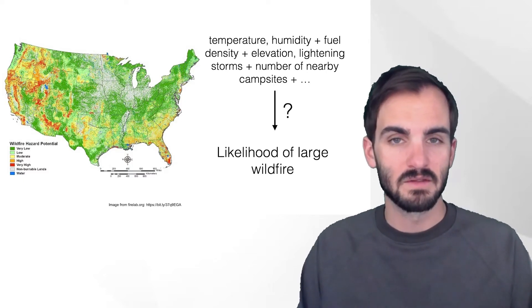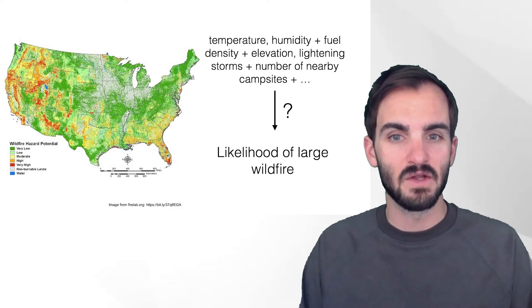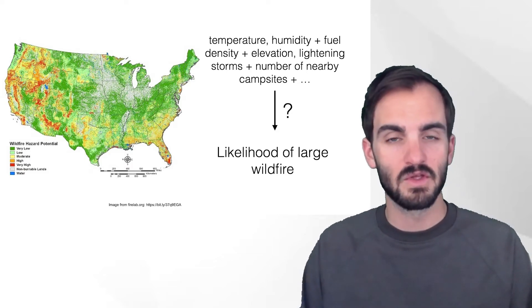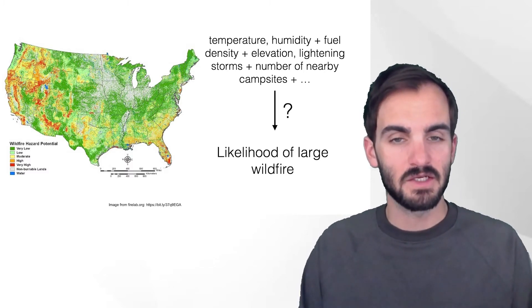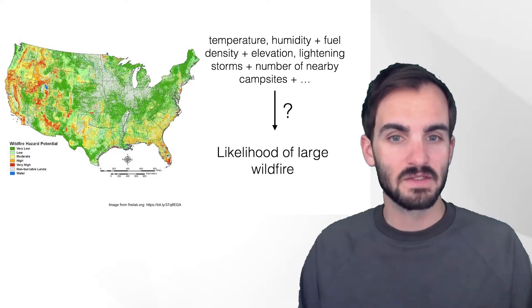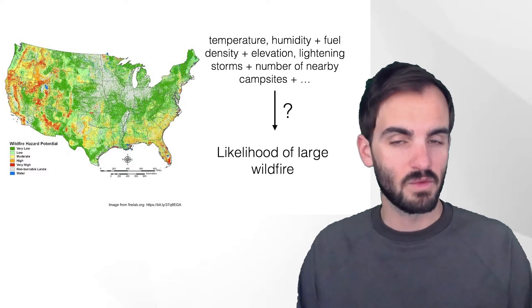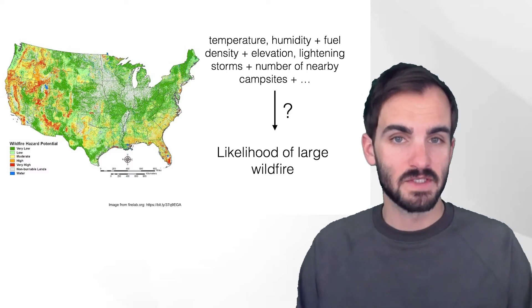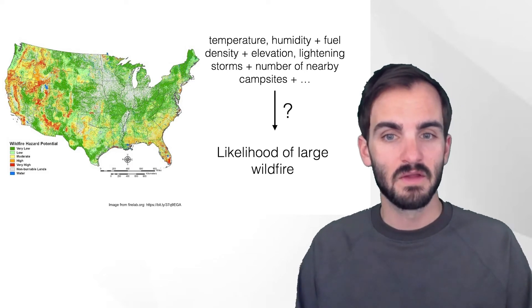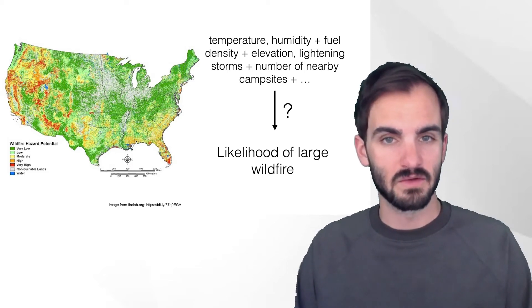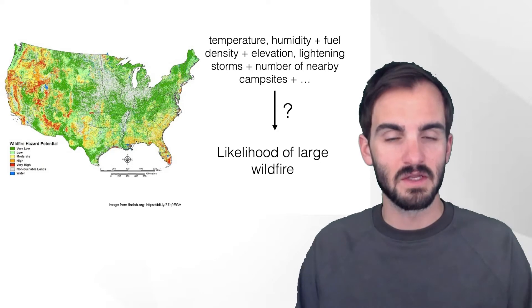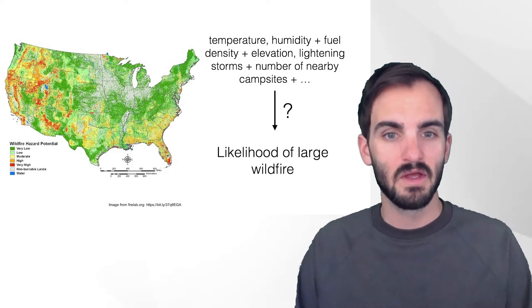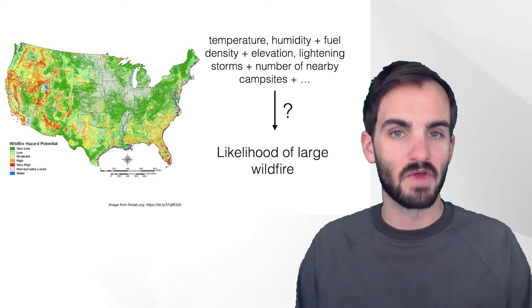But it might also be used for explanation, meaning we might actually like to know the relationship between temperature, humidity and the likelihood of a wildfire. The difference between prediction and explanation might be one of whether or not there's an action being taken. If we predict something about the likelihood of a wildfire, we might take actions to try to prevent it. If we're just interested in explaining the relationship between the likelihood of a wildfire and certain input variables, we might not necessarily take an action. We might just be interested in understanding the relationship without taking actions to prevent the wildfire.